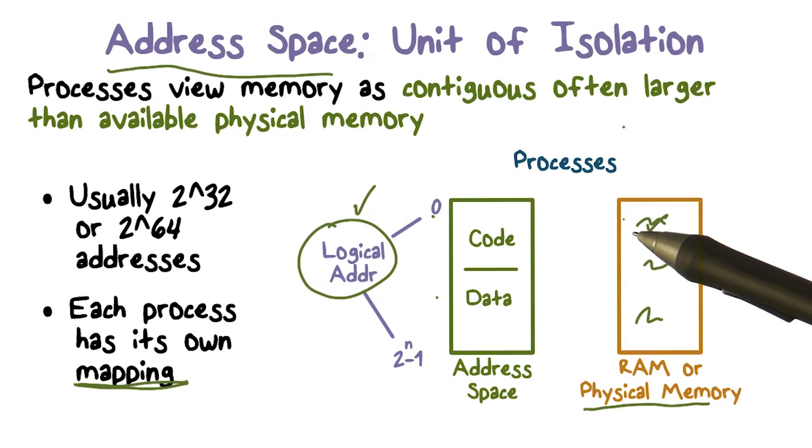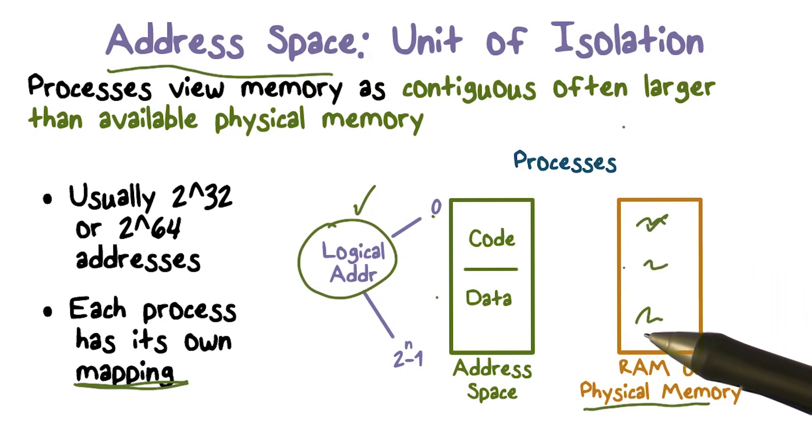I actually have to isolate what physical memory can process A access versus what physical memory can process B access. So the operating system has to do that. The way to think about isolation is when process A is running, its address space is in some parts of this physical memory. It should only be able to go to those parts.